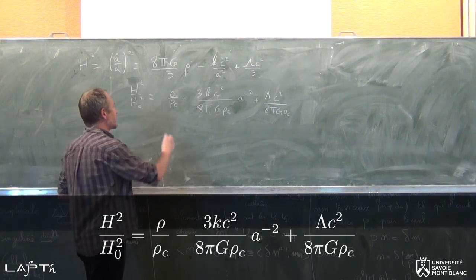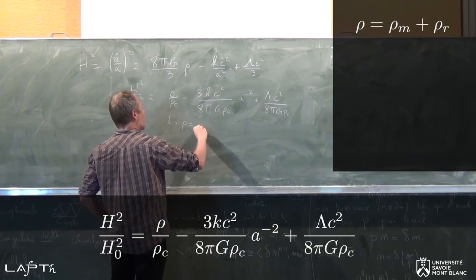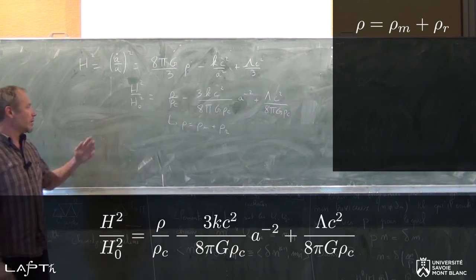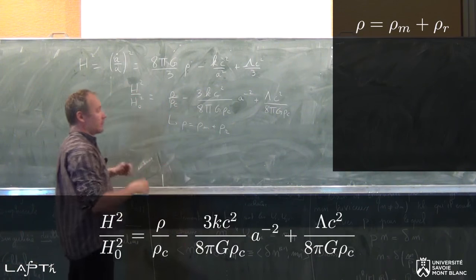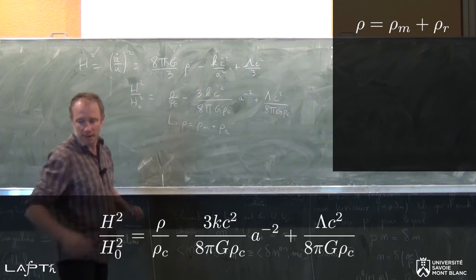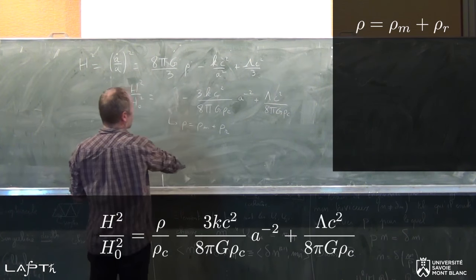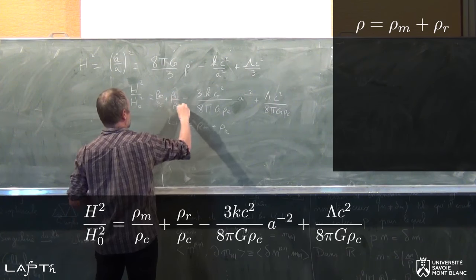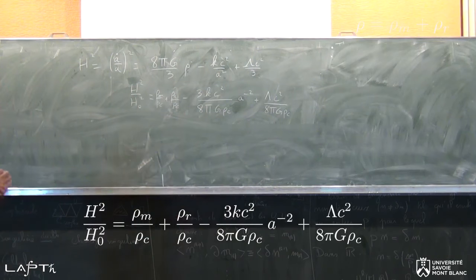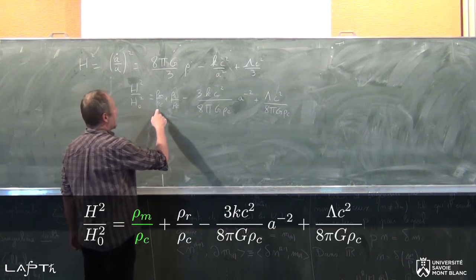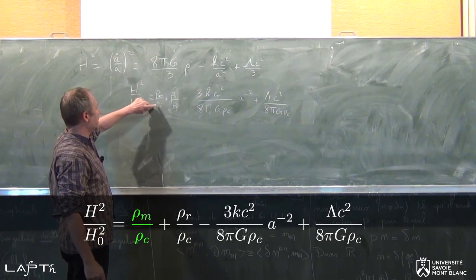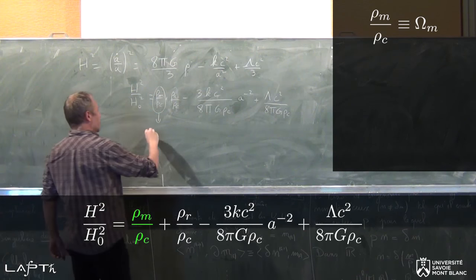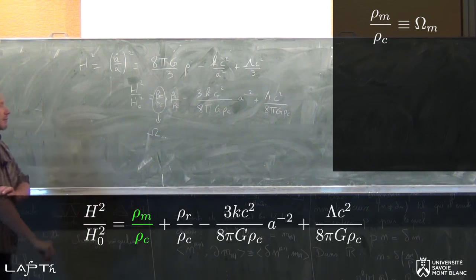Pour rendre les choses très explicites, le ρ qui est ici, je vais l'écrire comme ρ_M plus ρ_R, un rho de matière plus un rho de rayonnement, parce que ces deux composantes-là ont des évolutions différentes en fonction du facteur d'échelle. Cette quantité — la densité de matière divisée par la densité critique — on lui donne une notation particulière : on la note grand Ω petit m. Ça s'appelle un paramètre cosmologique. Ω est un nombre sans dimension qui représente la fraction que représente ρ_M par rapport à la densité critique. De même, ρ_R sur ρ_C, on l'appelle Ω petit r.